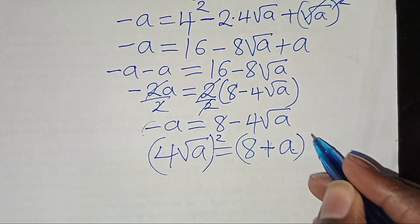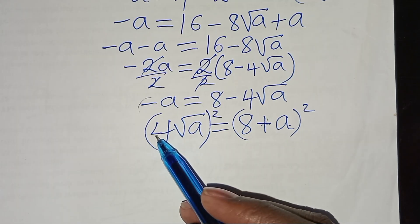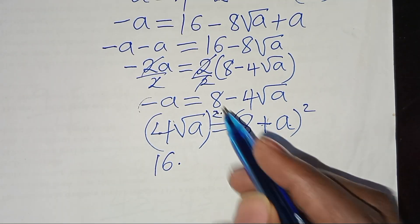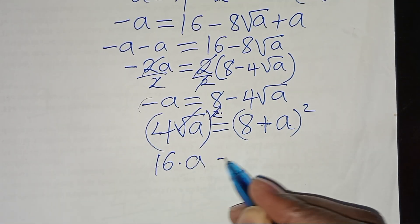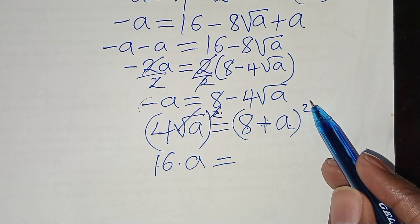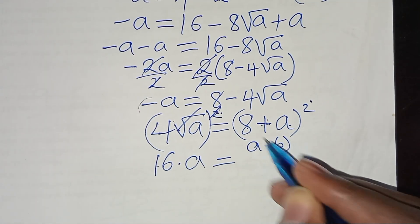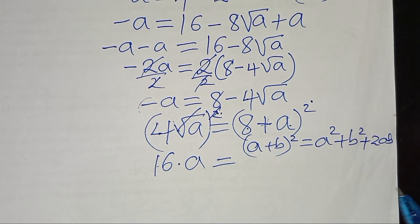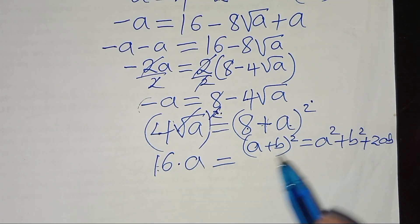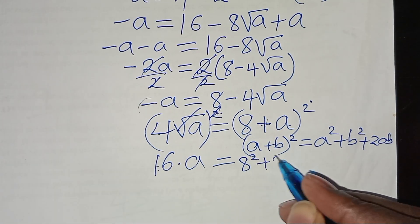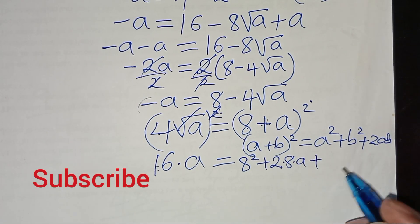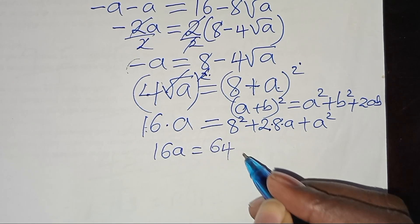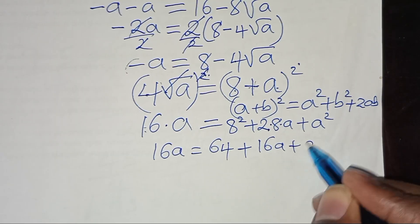Squaring both sides: (4√a)² = (8 + a)². The left side gives 16a. Expanding the right side using (a + b)² = a² + 2ab + b²: (8 + a)² = 64 + 16a + a². So: 16a = 64 + 16a + a².